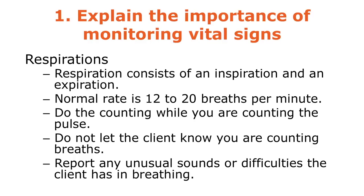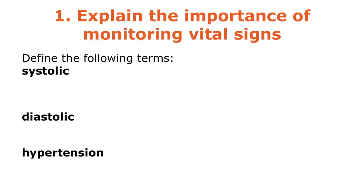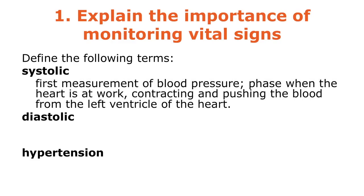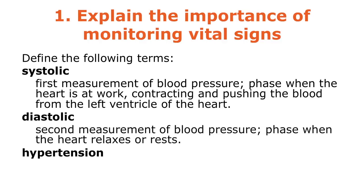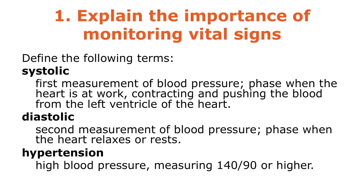Systolic blood pressure is the measurement when the heart is contracting and pushing blood from the left ventricle. Diastolic is when the heart relaxes and refills. Hypertension — 'hyper' meaning excess, 'tension' meaning pressure — is high blood pressure. Hypertensive patients have a systolic of 140 or higher, or a diastolic of 90 or higher.